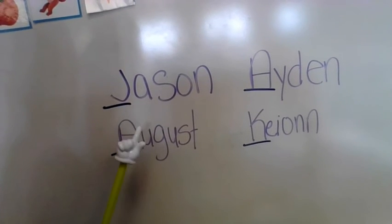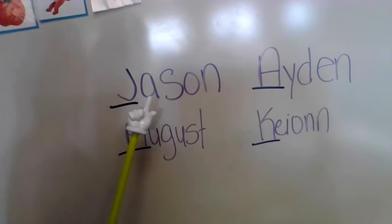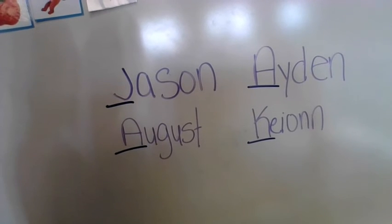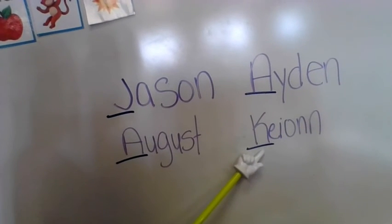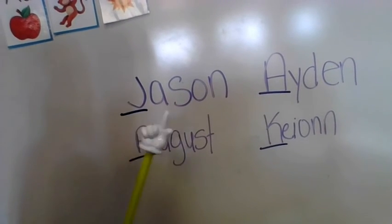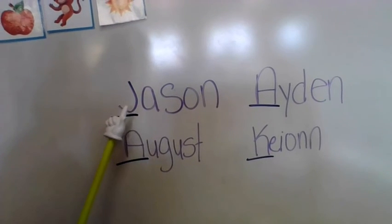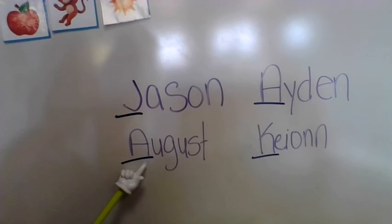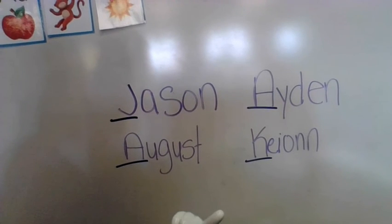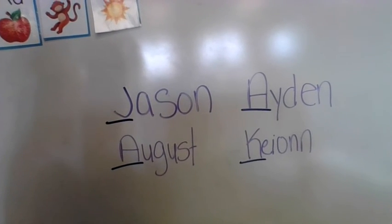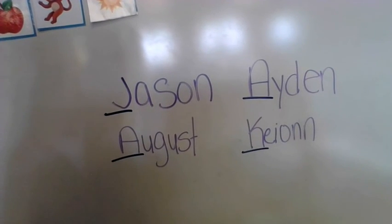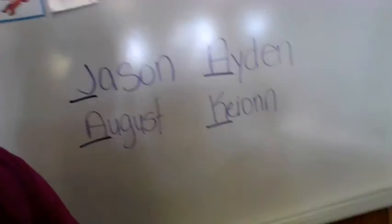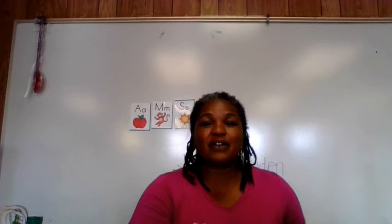We're looking at what letters are the same and which letters are different. Do Jason and Keon have the same letter as the first letter of their name? No, they have different first letters. Keon begins with a K and Jason begins with a J. J says J. A says A. K says K. A says A. Can you find anything in your home that has the same beginning letter as your name? Have fun going on a letter hunt for things that begin with the same letter as your name.